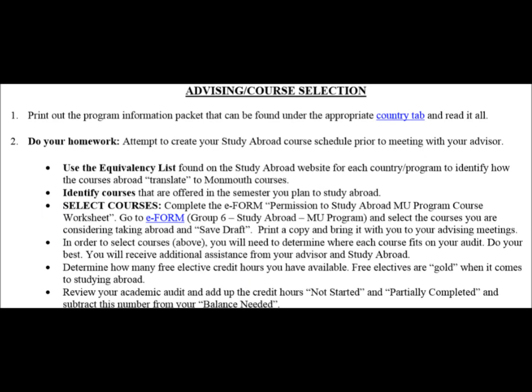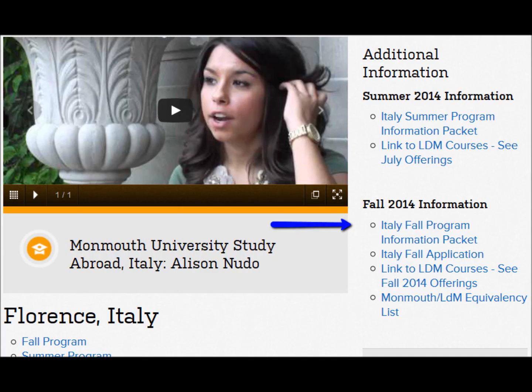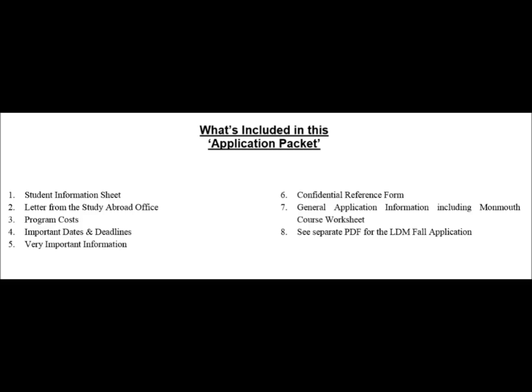Step 1 indicates that students should print out the program information. Go to the country page and locate the program information on the right side of the page. The program information provides details about program costs, deadlines, and more. Please read it thoroughly — it will address many of the questions you have.